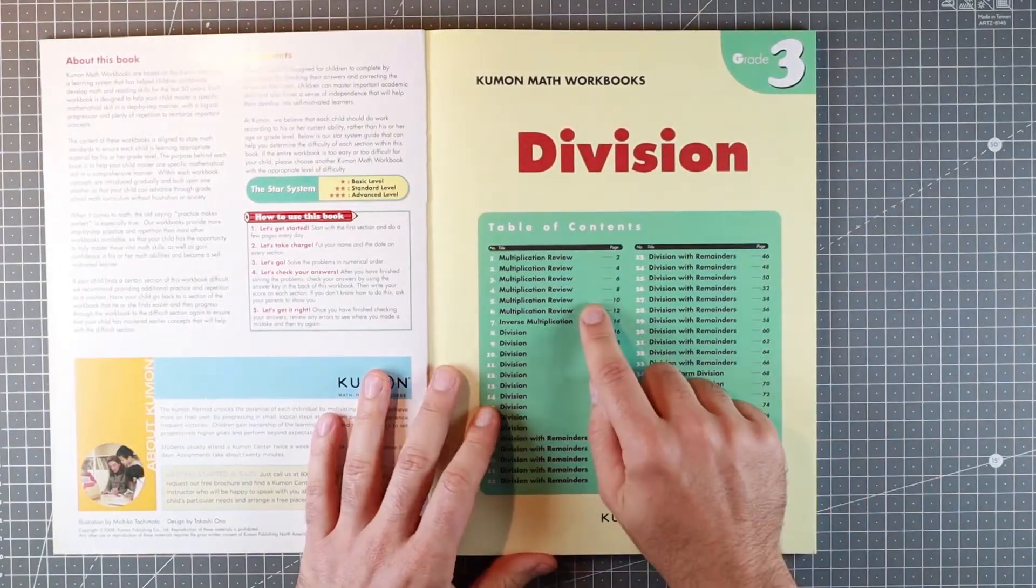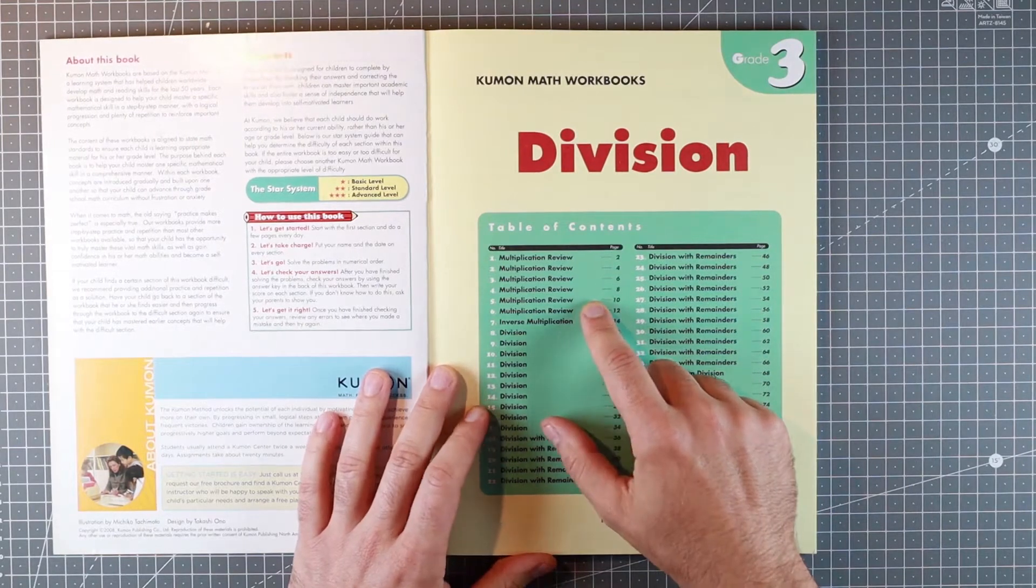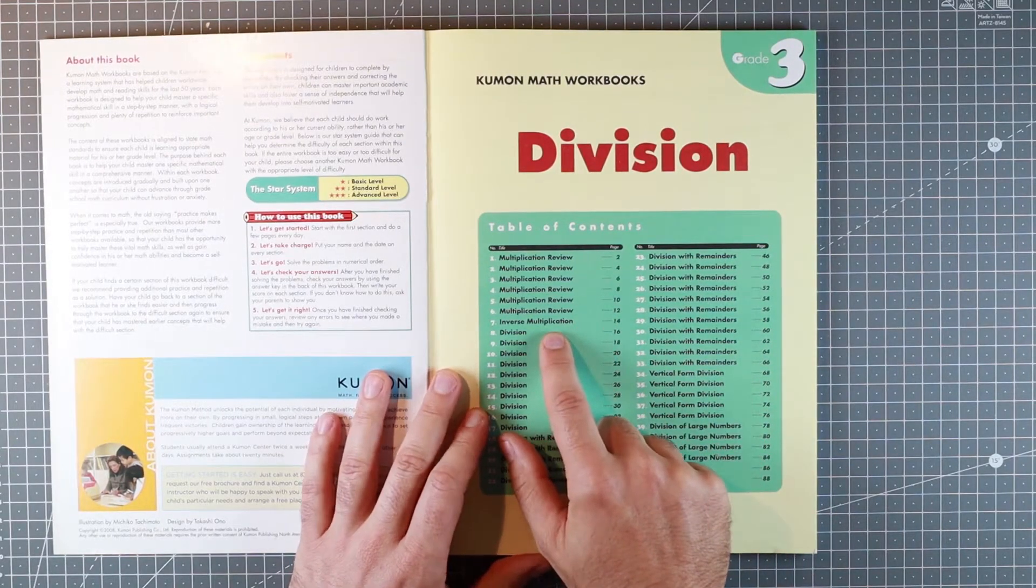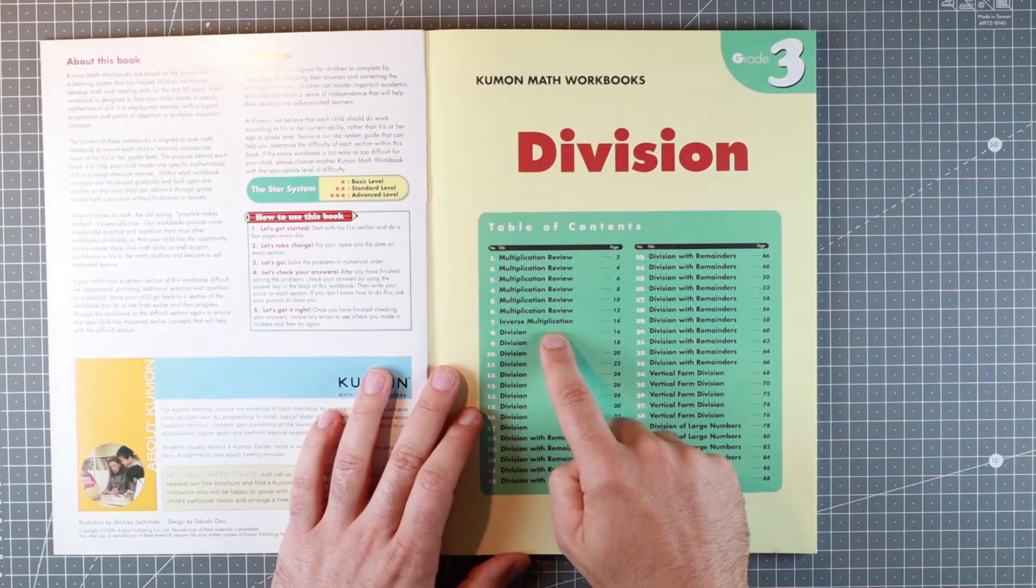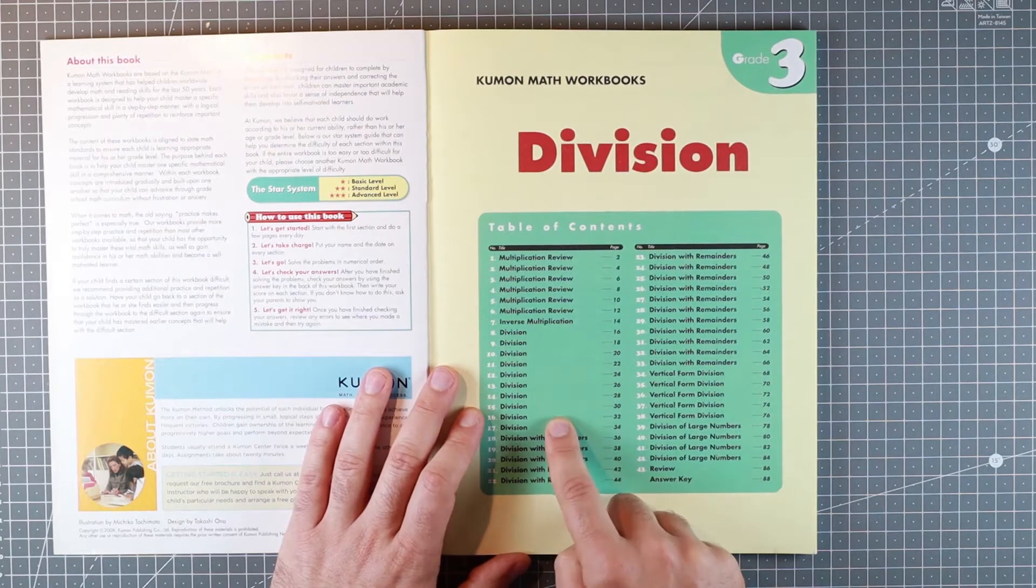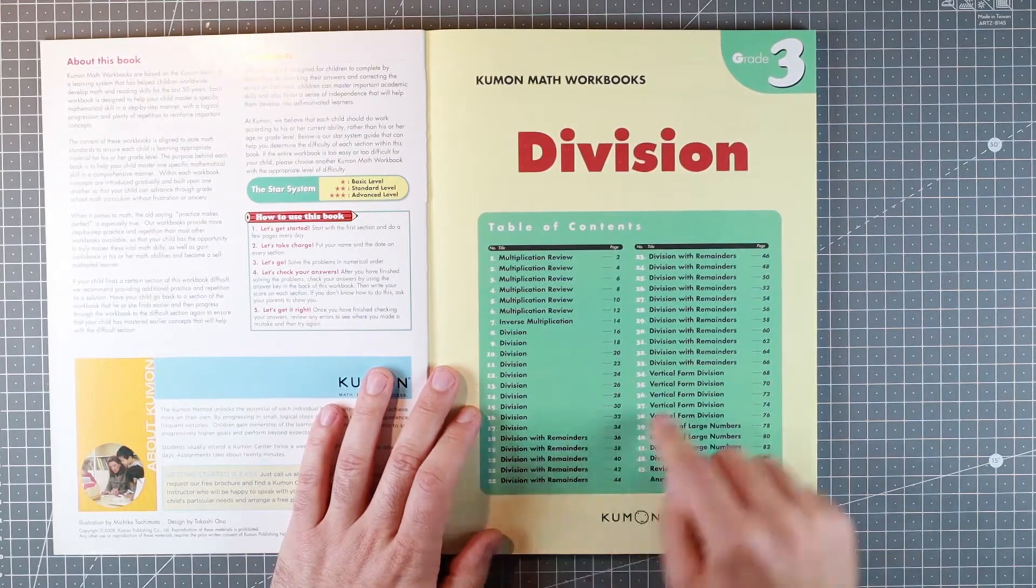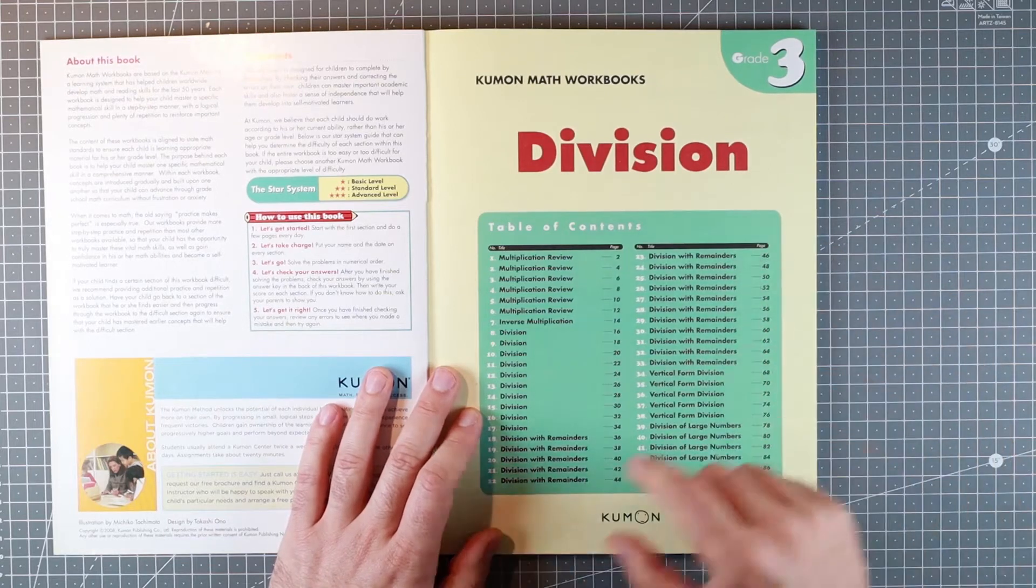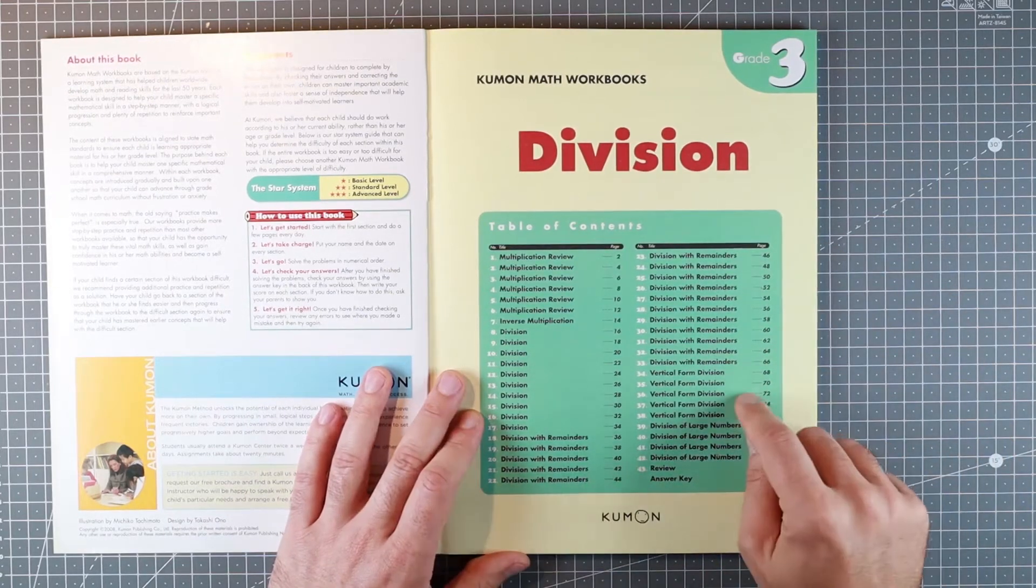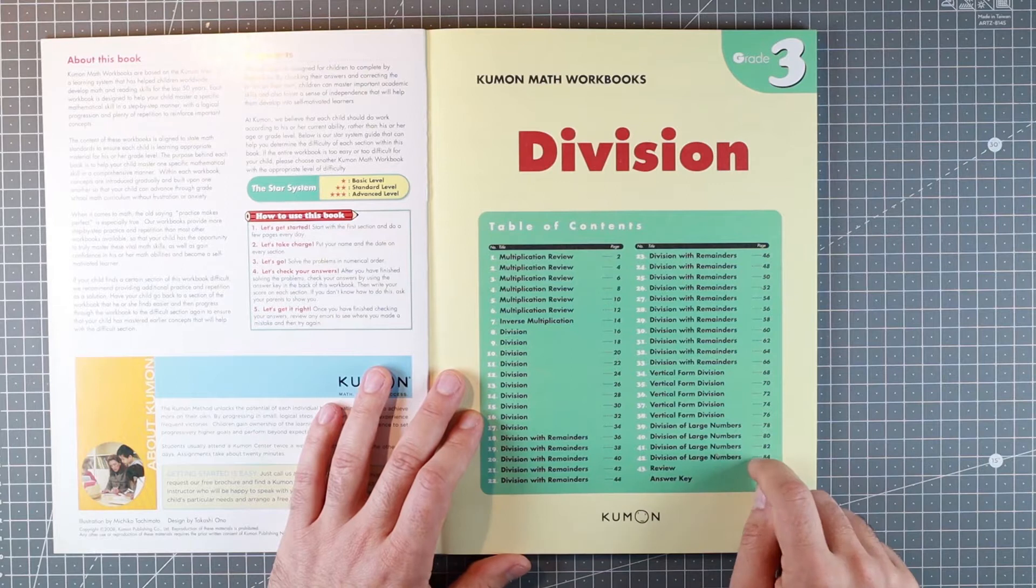Division 3 starts with a whole bunch of multiplication review, moves into inverse multiplication for one set of pages, then does a whole bunch of division. Simple division, then division with remainders, which is the bulk of this book.